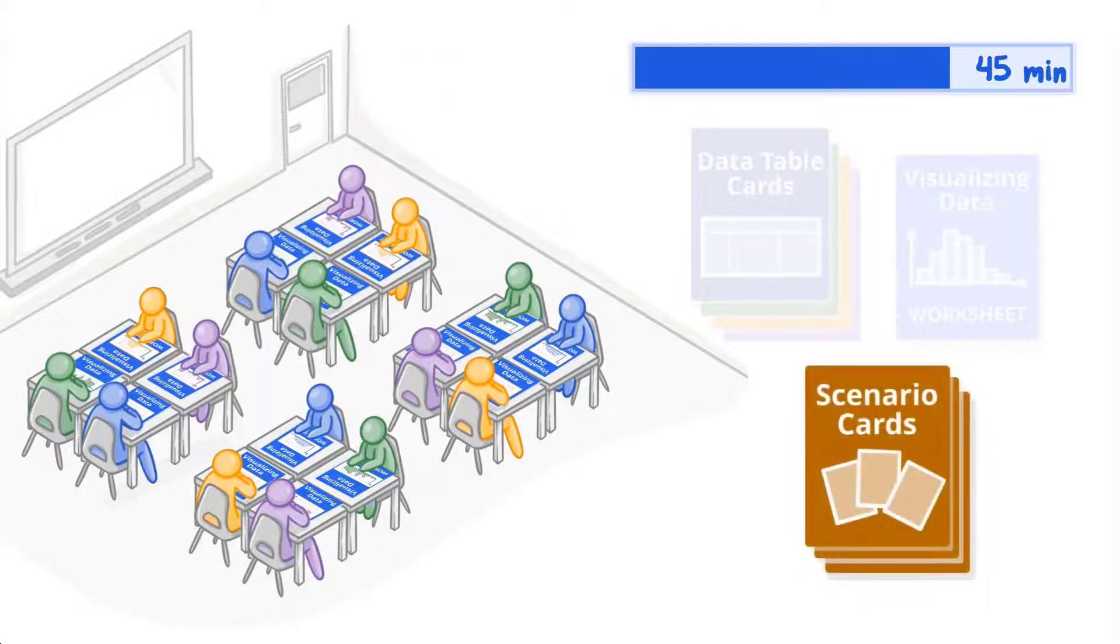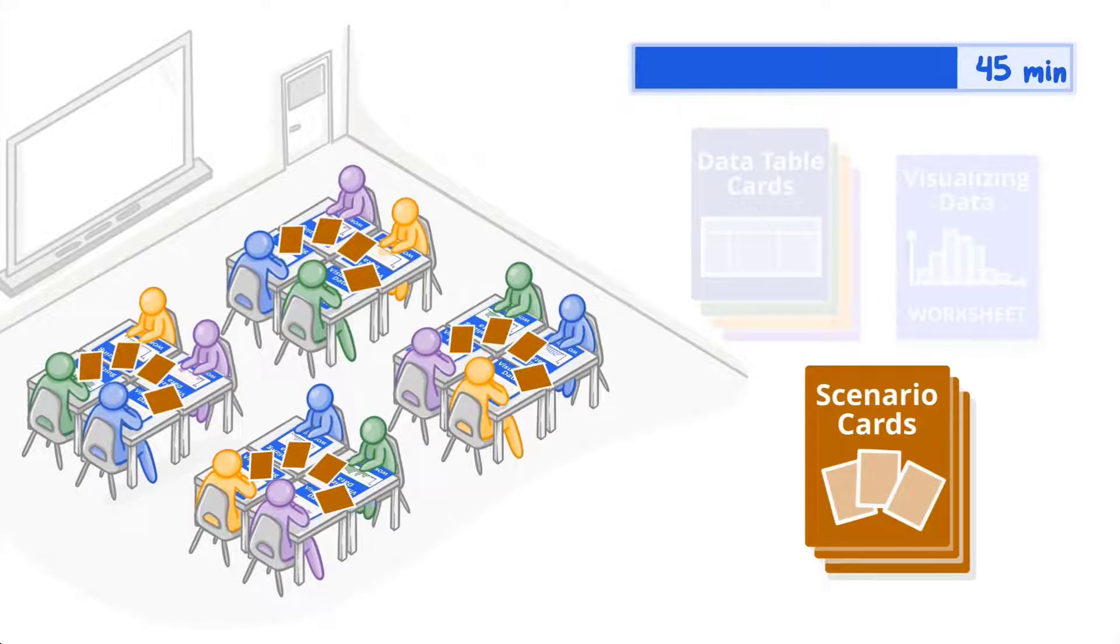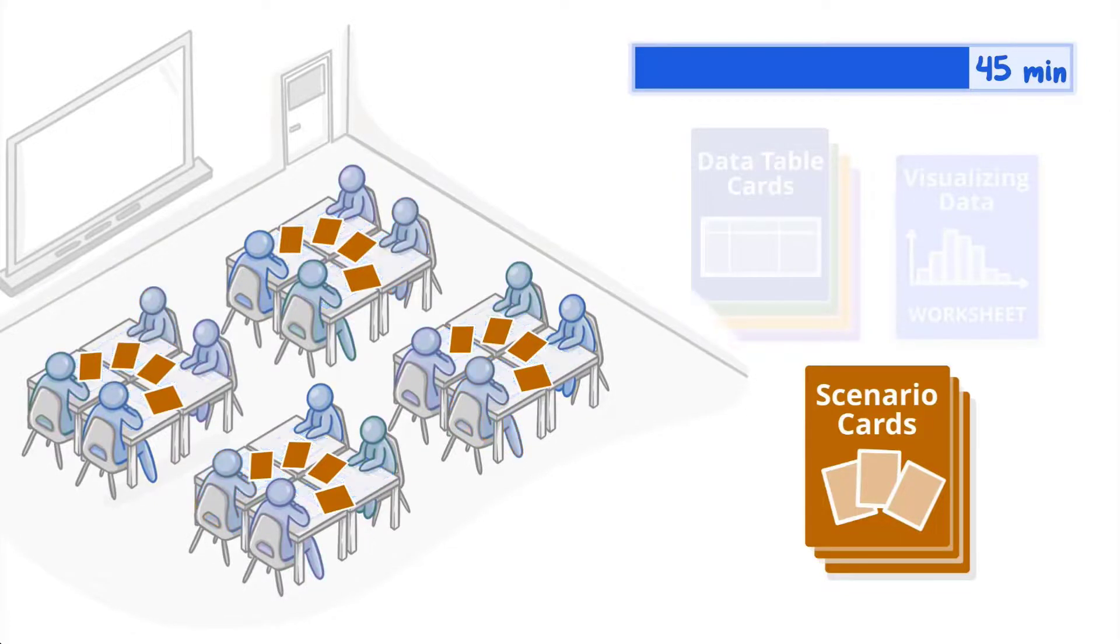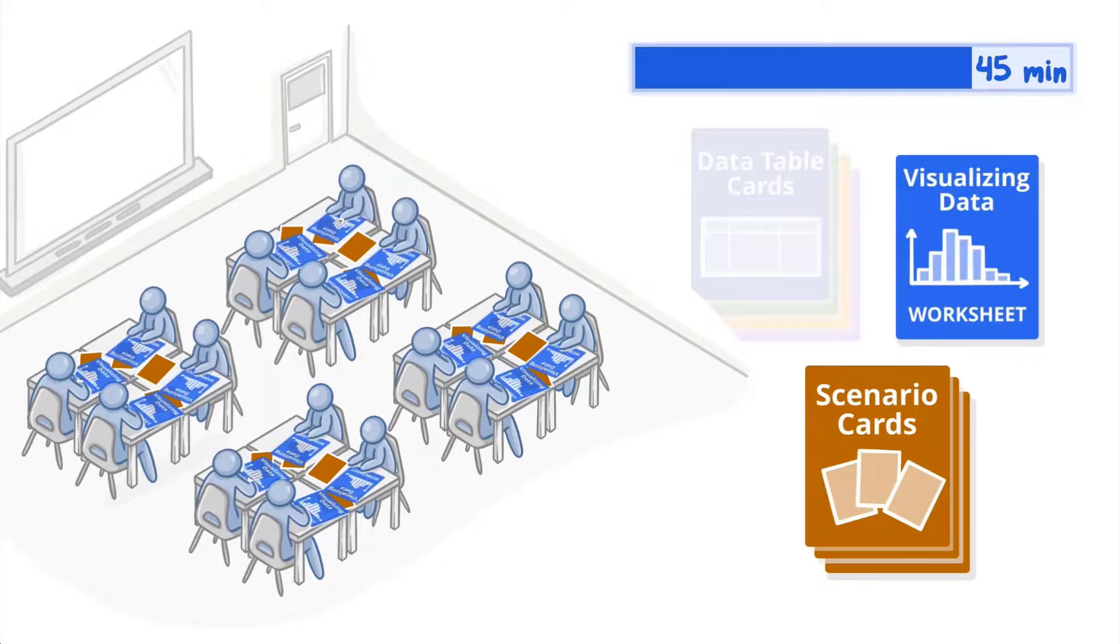Hand out a set of scenario cards to each home group and allow time for students in each group to match each scenario with the corresponding data and epi-curves that were created. Have them update their epi-curve titles in Part 1 based on the scenario on which they best match. Still in home groups, have students complete the remaining questions on the Visualizing Data worksheet.